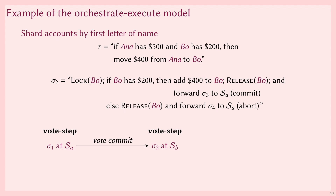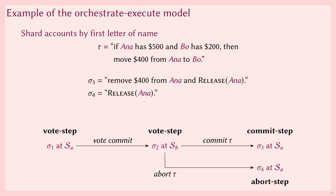The second shard step is a vote step at shard B. This vote step locks Bo's account and checks whether Bo has sufficient funds. If Bo has sufficient funds, then the transaction can be committed and executed. To do so, $500 is added to the account of Bo, and shard A is instructed to commit via the third shard step. If Bo does not have sufficient funds, then the transaction is aborted, and shard A is instructed to also abort via the fourth shard step. Finally, either the third or the fourth shard step is performed by shard A to commit or abort the transaction.